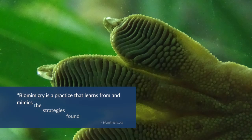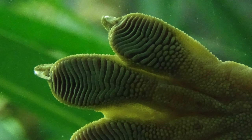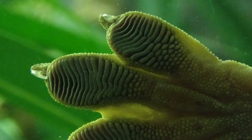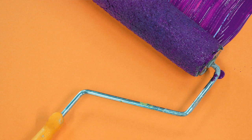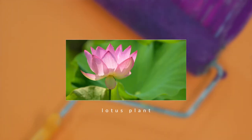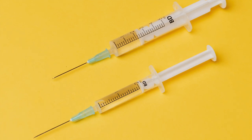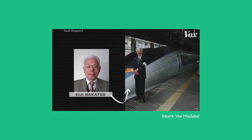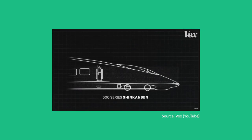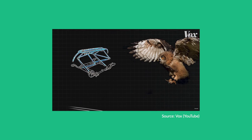We showed how people built gecko-inspired adhesives that let people climb walls; a new paint for homes that creates self-cleaning surfaces mimicking the microstructures of the water-and-dirt-repellent lotus plant; and a painless needle for shots that mimics the way a mosquito sucks blood. We even showed a Vox video of how a Japanese engineer used the structures of different types of birds to improve a bullet train.